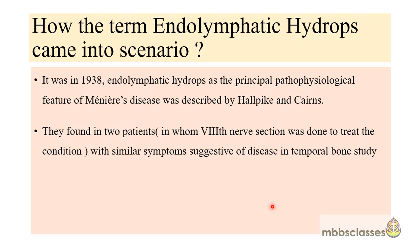How did the term endolymphatic hydrops come into the scenario? After Sir Prosper Meniere described the disease, any sort of peripheral vertigo was in general labeled as Meniere's disease, and the treatment at that period was 8th nerve section to relieve the symptom complex. It happened in 1938 when two surgeons — Hall, Pike and Cairns — were operating on two patients with a similar symptom complex. Unfortunately, both patients died. Post-mortem temporal bone studies of the inner ear in both patients were suggestive of endolymphatic hydrops. This is how endolymphatic hydrops as the pathophysiological feature of Meniere's disease came into the scenario.